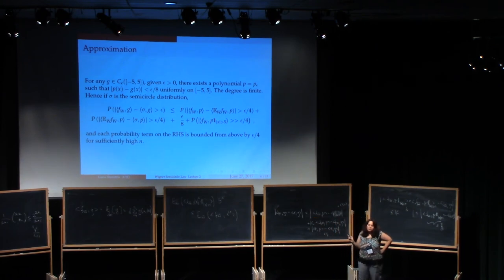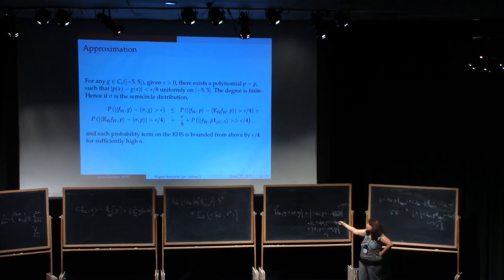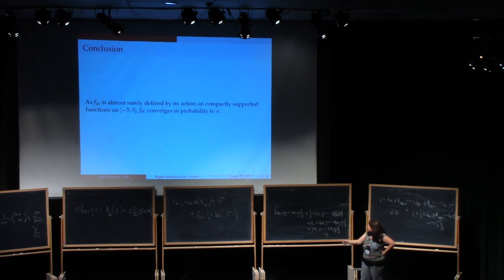This says that the lim sup of the probability of this being bigger than ε is 0 for any ε and for any function G, and therefore convergence in distribution holds. Yesterday this worked perfectly; today not so much — we're going to call it there.